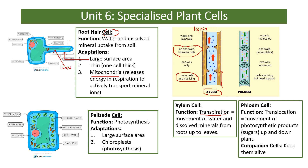Phloem cells are for translocation — the movement of sugars and other products of photosynthesis, which can travel up or down the plant wherever needed. Phloem cells are adapted with sieve plates at the end of each cell — little holes instead of a solid cell wall — allowing materials to pass through. Phloem cells are kept alive by companion cells, and they also have lots of mitochondria because they need energy to load sugars in and out.